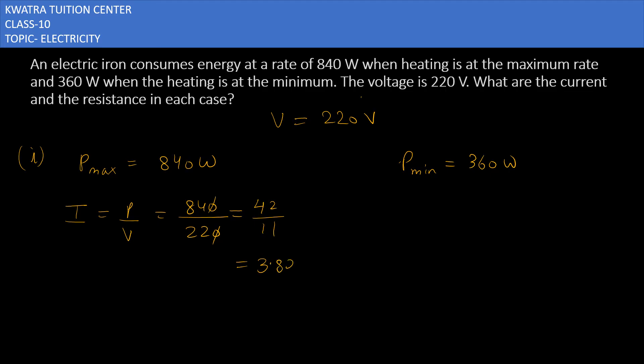Here I will be P over V. P value 360 and V is 220. Zero-zero cancel, it will give you 18 over 11, and 18 over 11 is about 1.64 amps.